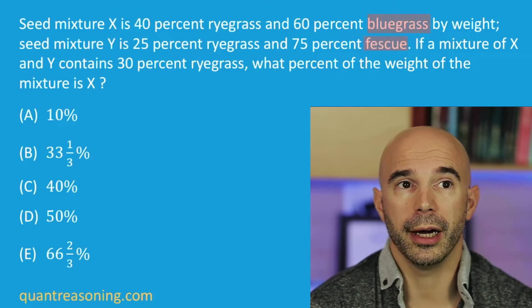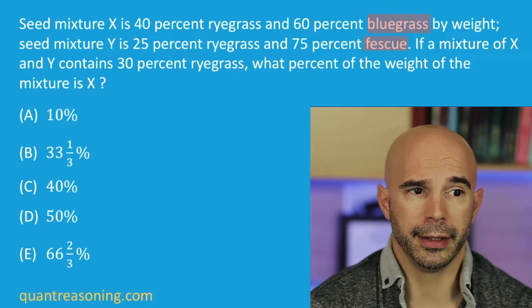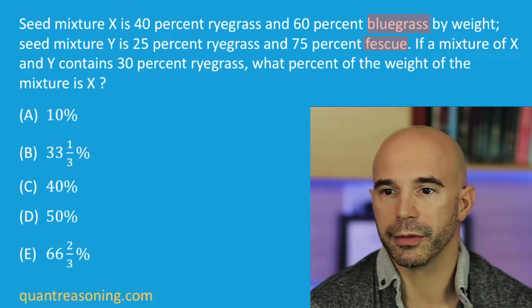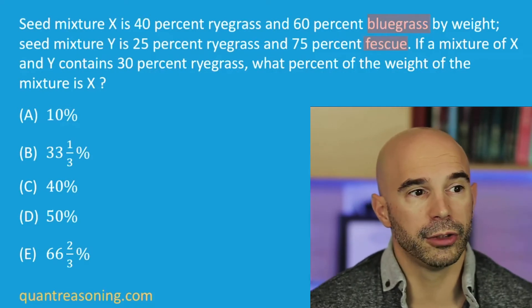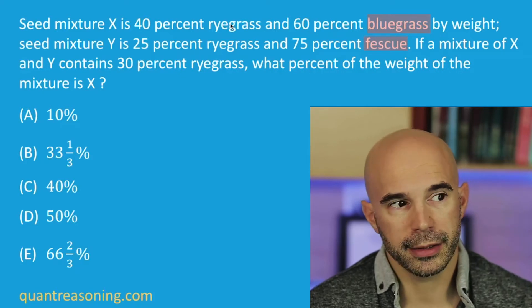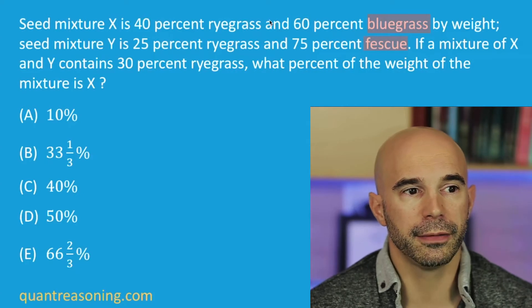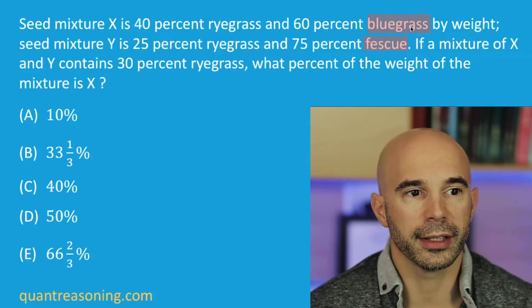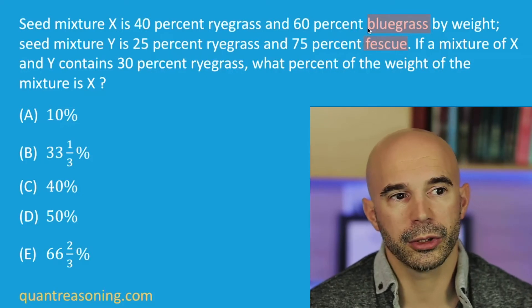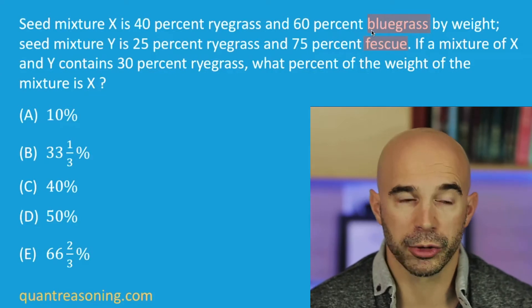I could probably count 5 to 10 official GMAT questions that I've seen in my career, and I've seen a lot. So it is pretty rare, but it does happen, and this is one of those cases. They could have just told us that seed mixture X is 40% ryegrass and seed mixture Y is 25% ryegrass and just stop there. There was no need to tell us what the remaining percentages are comprised of, but they chose to do that in order to increase the difficulty level, because it is something that can be distracting.